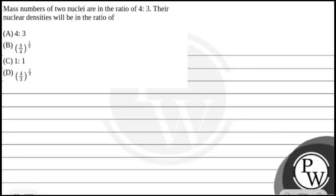Hello, let's read this question. The question says mass numbers of two nuclei are in the ratio of 4 is to 3. Their nuclear densities will be in the ratio of: Option A: 4 is to 3, Option B: (3/4)^(1/3), Option C: 1 is to 1, and Option D: (4/3)^(1/3).